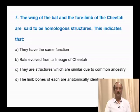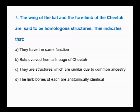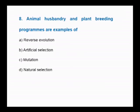Question number 7: The wing of the bat and the forelimb of the cheetah are said to be homologous structures. Options: they have the same function; bats evolved from a lineage of cheetah; they are structures similar due to common ancestry; the limb bones of each are anatomically identical. Homologous organs are organs similar in structure and origin but different in function, and they explain common ancestry. The correct answer is option C: they are structures similar due to common ancestry.